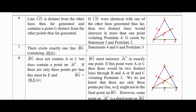There exists a line BG containing B and G. That line has to intersect line AC. If it intersected at A, then lines BG and ABD would intersect at two points — that's not allowed. If it intersected at C, we'd have the same problem. So it has to intersect at E. Therefore B, G, and E must all be on the same line.